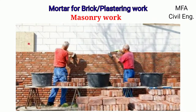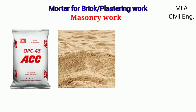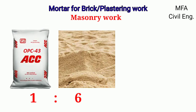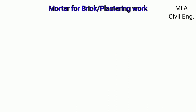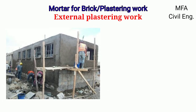For masonry work, the proportion of cement to sand in the mortar should be 1:6, that is one part of cement and six parts of sand. The proportion of water in the mortar varies from 0.45 to 0.6 times the weight of the cement.